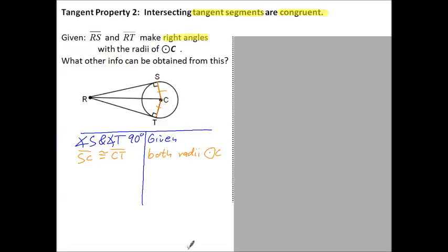And together with our tangent segments, they form two triangles, and those two triangles share one side, and that is the side RC. So segment RC is congruent to segment RC, and that is because of the reflexive property.